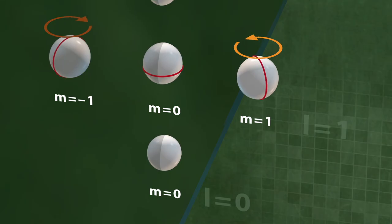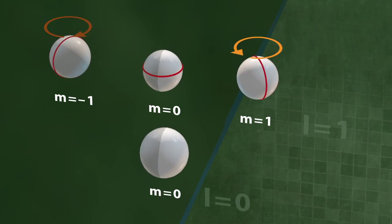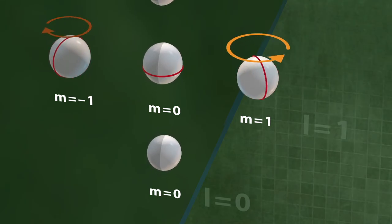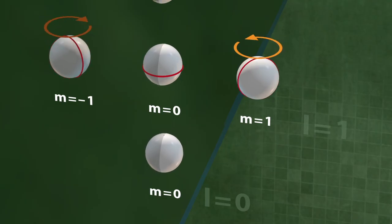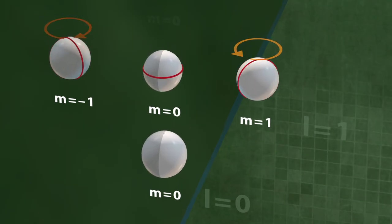There are now two new modes of vibration on the spherical surface with one nodal line. Those are vibrations with an azimuthal nodal line that is rotating clockwise or anticlockwise.